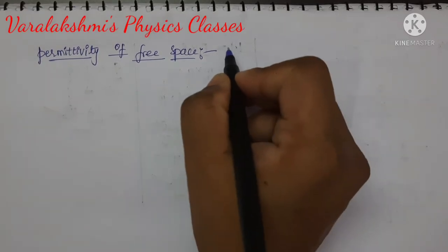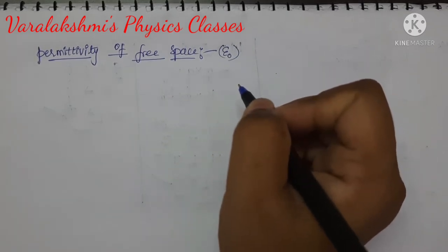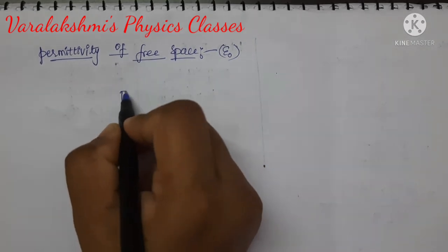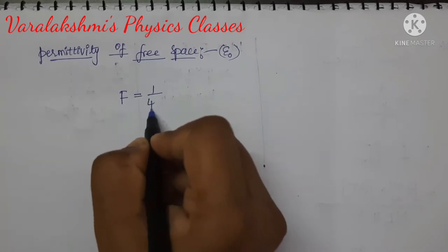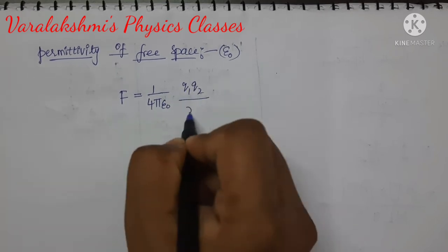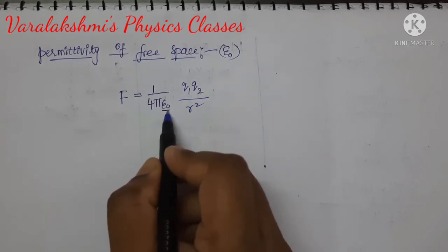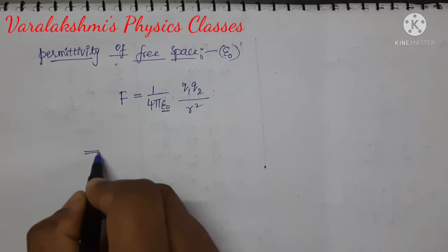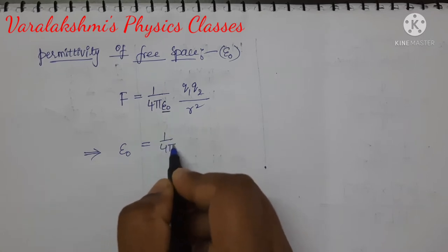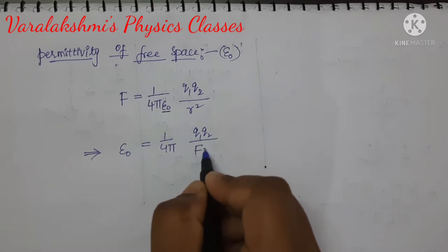Permittivity of free space is denoted with the symbol epsilon 0. To write the dimensions of the permittivity of free space, we have to write the formula for electrostatic force. That is, F is equal to 1 by 4 pi epsilon 0 into Q1 Q2 by R square. Now, we want to find the dimensions of permittivity of free space, so bring epsilon 0 to this side: epsilon 0 equals 1 by 4 pi into Q1 Q2 by F R square.